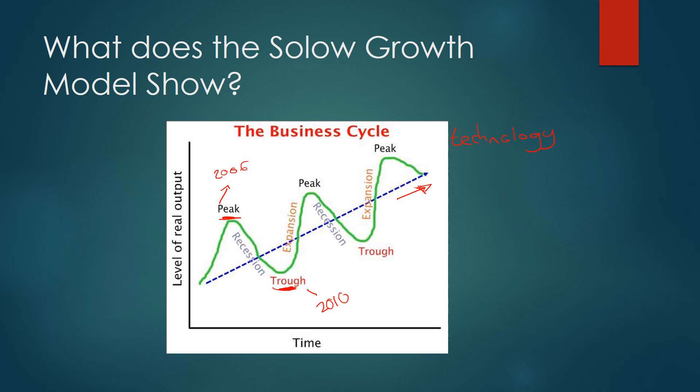The Solow growth model essentially says that this dotted blue line is caused by technological progress, but it is not caused by capital. The reason for this is that capital has decreasing returns to scale in the economy, so if you keep increasing capital with a fixed labour supply you're not going to increase output continuously because you'll reach a steady state. All you need to know for now is that technology or technological progress is what causes long-term growth in GDP levels, not increases in capital.